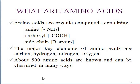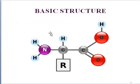About 500 amino acids are known and can be classified in many ways. This is the basic structure of an amino acid, having an NH2 group, an R group, and a COOH group.